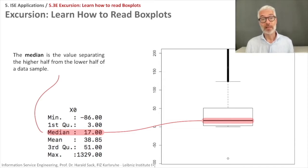50% of the values lie below the median, so between minus 86 and 17. So this gives you already some idea of the distribution of the data.